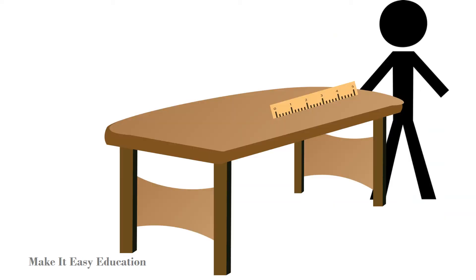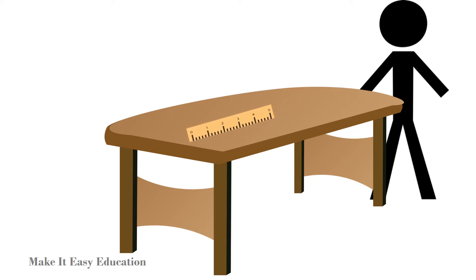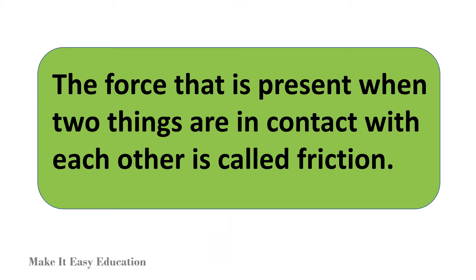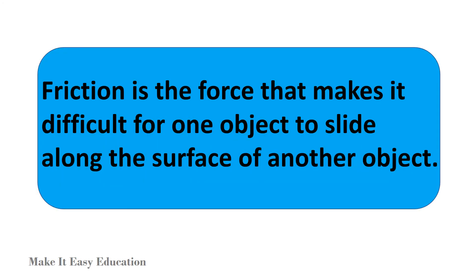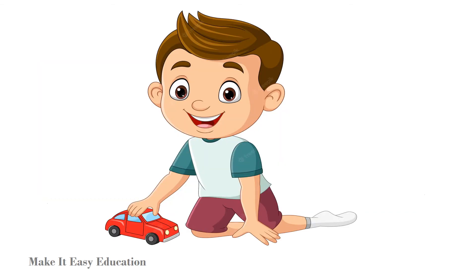When a ruler is pushed across a table, it stops after moving a certain distance. It stops because of friction. The force that is present when two things are in contact with each other is called friction. Friction is the force that makes it difficult for one object to slide along the surface of another object. Friction resists the motion of the object on the surface.